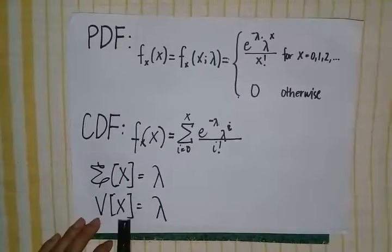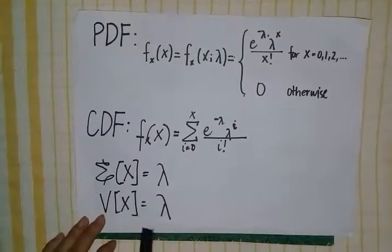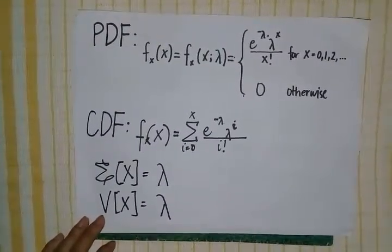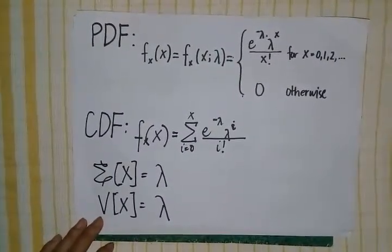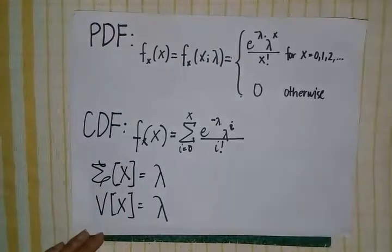The Poisson distribution's mean and variance are both equal to λ.